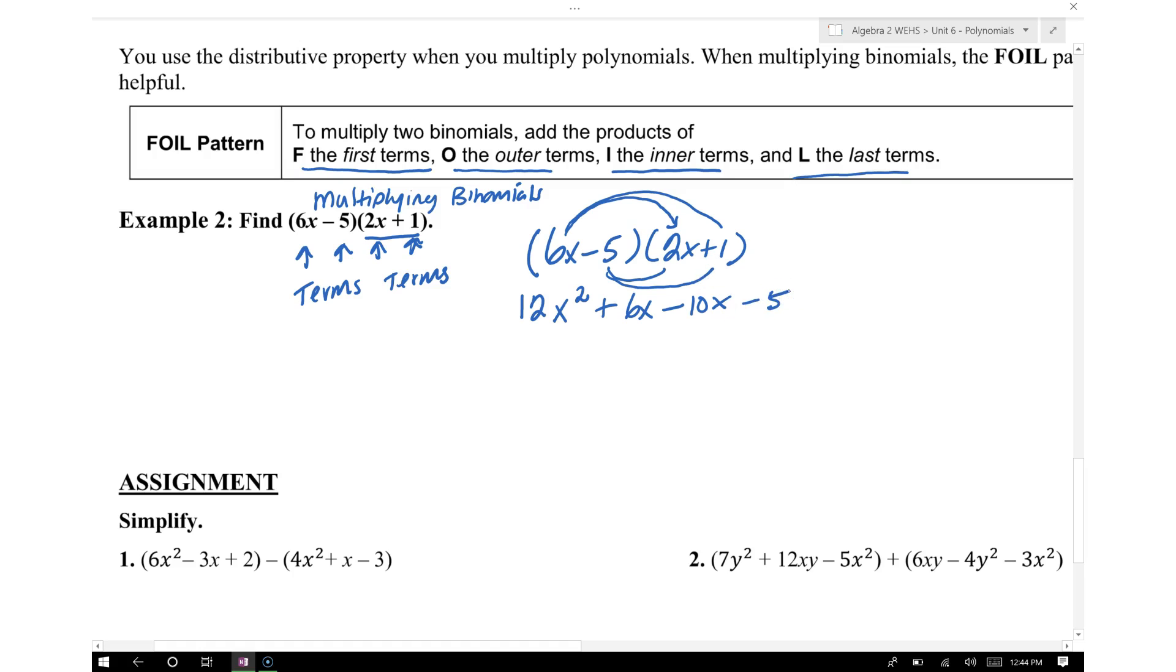Now what we have to do is simplify the polynomial by combining the like terms. Therefore we have 12x squared, and we have 6x minus 10x which gives us negative 4x minus 5. So we multiply 6x minus 5 times 2x plus 1, these two binomials. This will be the product of the two binomials.